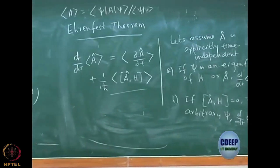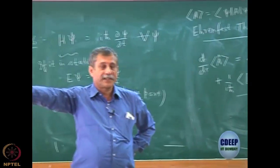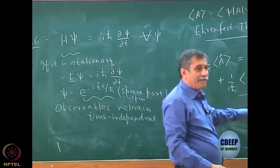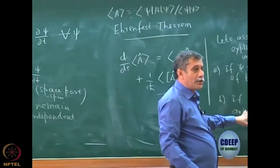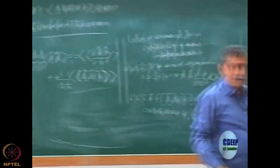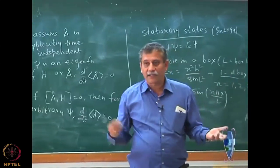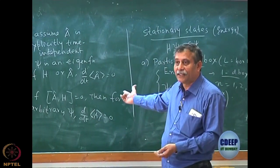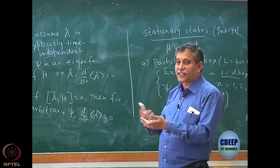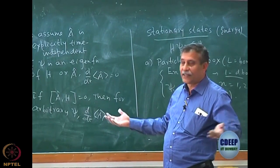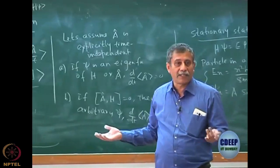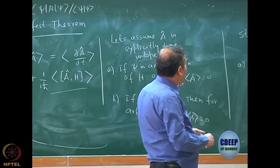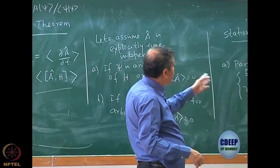For electrons, the product will become an anti-symmetrized product, but right now there is only a single particle, so it is just a product of X, Y, and Z directions. Energy is a sum. Invoke the same non-interacting theorem and you can generate the total wave function.